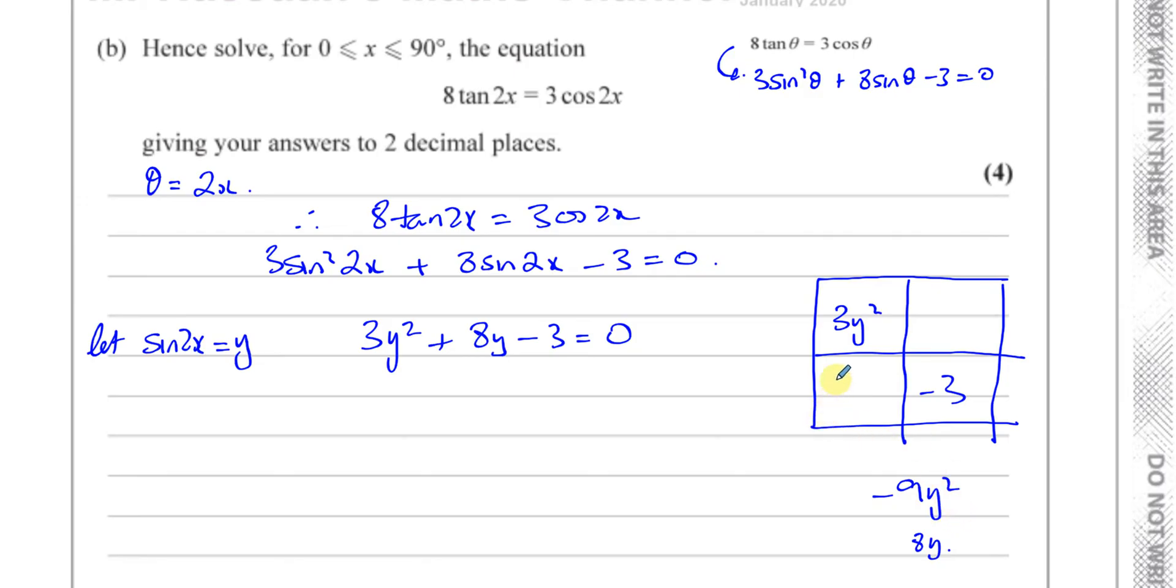It must be 9 and minus 1, 9y and minus 1y, they give you minus 9y squared and they add to give you plus 8y, that's correct. So the common factor from this column is 3y and here it's y so that gives you 3y squared minus 1 and 3y times plus 3 gives you 9y. So we've got our factors, 3y minus 1 and y plus 3 equals 0, so we can say y is equal to 1 third and y equals negative 3.